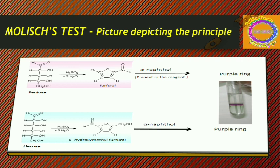Both furfural compounds — from pentose and hexose — contain the CHO group: a C double bond O and single bond H, which is the aldehyde group. These furfural derivatives are aldehyde compounds. The presence of alpha-naphthol then gives a purple ring, or the whole sample turns purple in color.